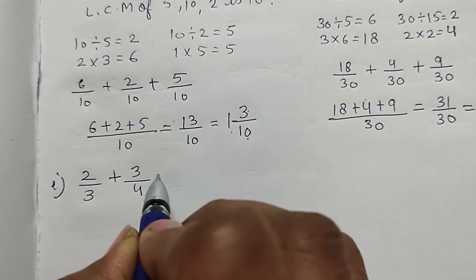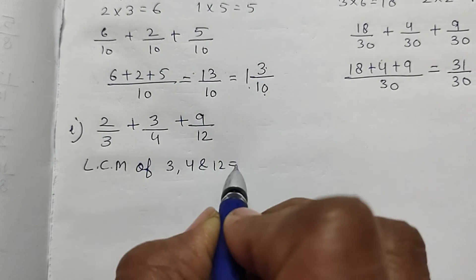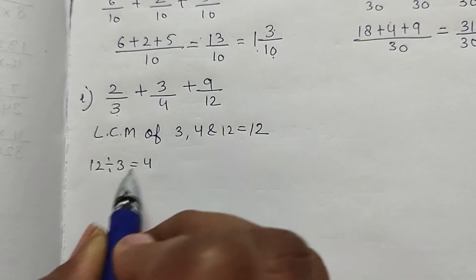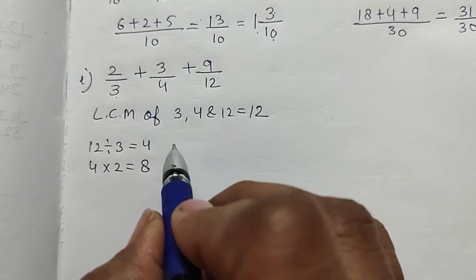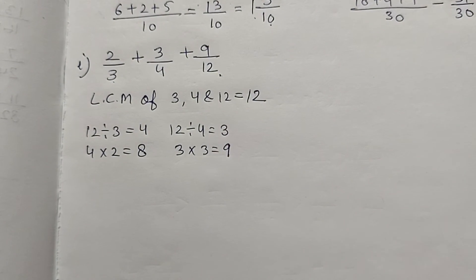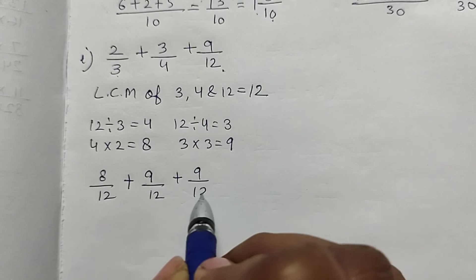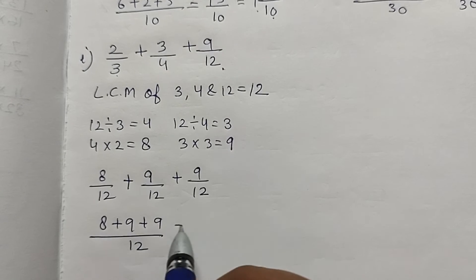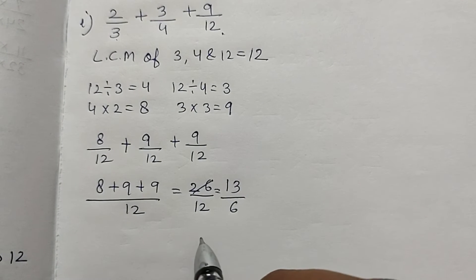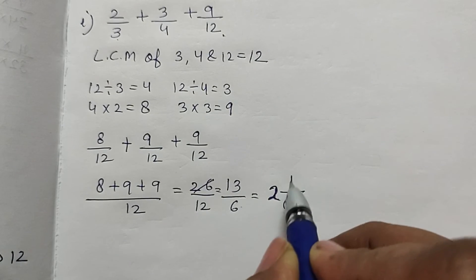Part i: 2/3 plus 3/4 plus 9/12. LCM of 3, 4, and 12 is 12. 12 divided by 3 is 4, and 4 multiplied by 2 is 8, so 2/3 is 8/12. 12 divided by 4 is 3, and 3 multiplied by 3 is 9, so 3/4 is 9/12. The denominator for 9/12 is already 12. So 8/12 plus 9/12 plus 9/12 equals 26/12. Reducing: divide by 2 gives 13/6, which as a mixed number is 2 and 1/6.